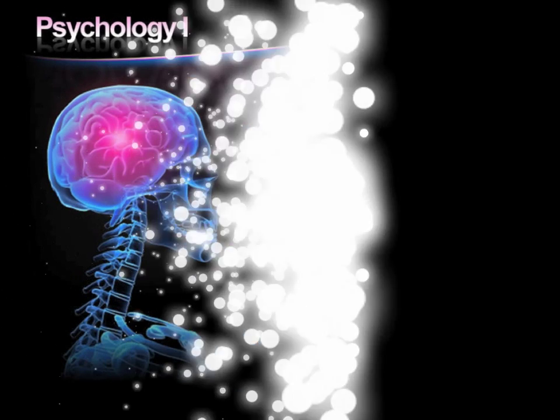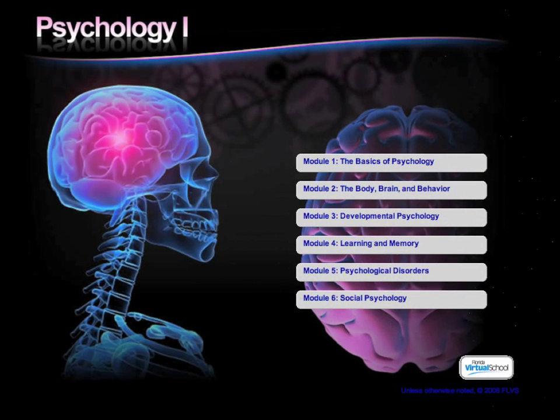Welcome to your Psychology One course with Florida Virtual School. Psychology One is a one-segment half-credit course surveying the histories, theories, and practices of modern psychology. This course introduction will ensure you have all the tricks and tools necessary for ultimate success from your first day onward.